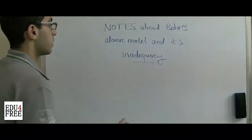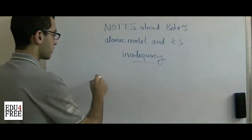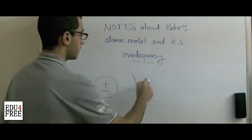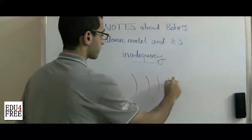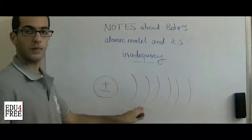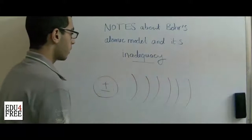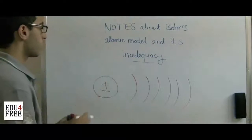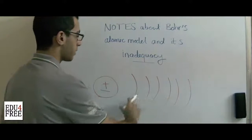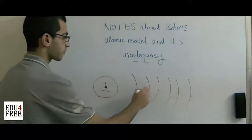During Bohr's study for his atomic model, he studied the distances between the energy levels and found that the distances between each energy level and the nucleus is not equal. Each energy level has its own amount of energy, and this energy depends on how far the energy level is from the nucleus, or in other words, it depends on the radius of the energy level.